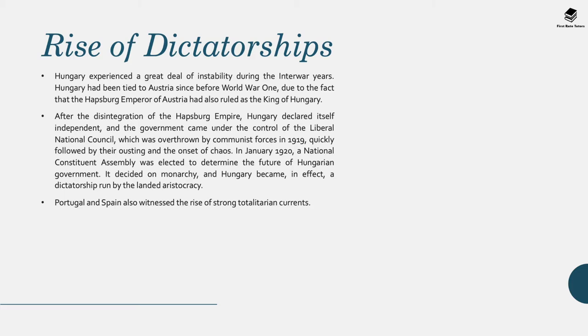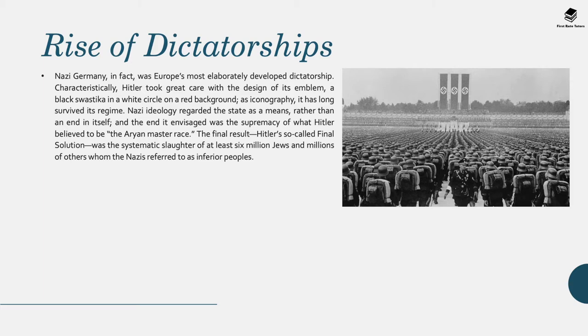Portugal and Spain also witnessed the rise of strong totalitarian currents. Nazi Germany was Europe's most elaborately developed dictatorship. Hitler took great care with the design of the Nazi emblem — a black swastika with a white circle on a red background, which has long survived its regime. The Nazi ideology regarded the state as a means rather than an end, and the end it envisaged was the supremacy of what Hitler believed to be the Aryan master race — blonde hair, blue eyes. The final result, Hitler's so-called final solution, was the systematic slaughter of at least 6 million Jews and millions of others — including Slavic peoples, Romani, Gypsies and Africans — whom the Nazis referred to as inferior peoples.